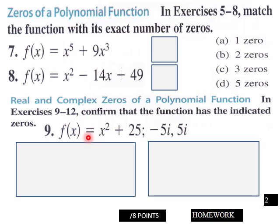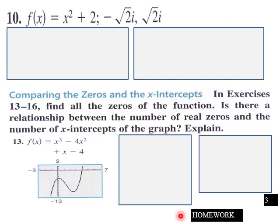In this exercise, confirm that the function has the indicated zeros. So basically, find these zeros out of this function here. Eight points here.